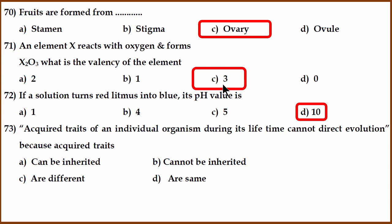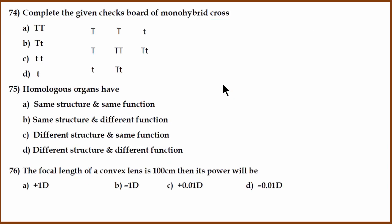73rd biology question. An acquired trait of an individual organism during its lifetime cannot direct evolution. Why? Acquired traits don't get passed on. So they cannot be inherited.